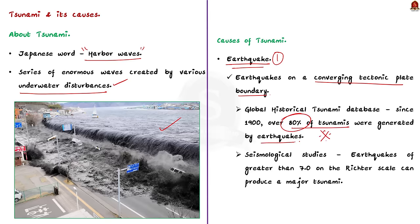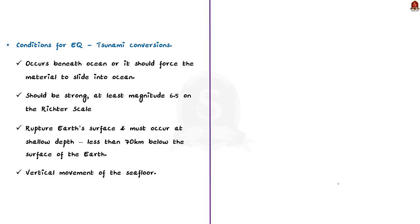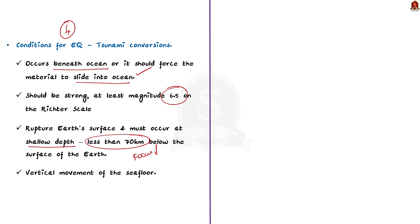Seismological studies found that an earthquake of greater than 7.0 on the Richter scale can produce a major tsunami. Not all earthquakes cause tsunamis — there are four necessary conditions. First, the earthquake must occur beneath the ocean or force material to slide into the ocean. Second, it should be strong with at least a magnitude of 6.5 on the Richter scale. Third, it must rupture the earth's surface and occur at a shallow depth of less than 70 kilometers below the surface. Finally, it must cause vertical movement of the sea floor.